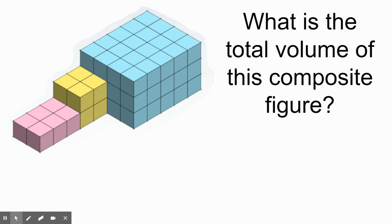The total volume of this composite figure: the pink prism has a volume of 6 cubic units — you can count the cubes. The yellow prism has a width of 2, a length of 2, and a height of 2, so 2 times 2 times 2 equals 8 cubic units. Adding yellow and pink together gives 14 cubic units. The blue prism has a length of 5, a width of 4, and a height of 3 — so 5 times 4 is 20, times 3 is 60. Adding 60 plus 8 plus 6 gives a total volume of 74 cubic units.